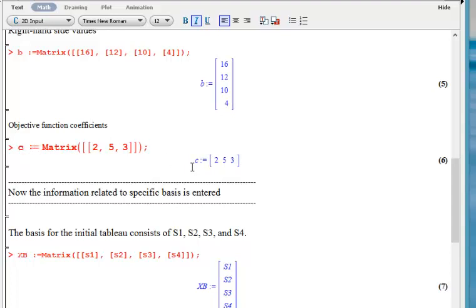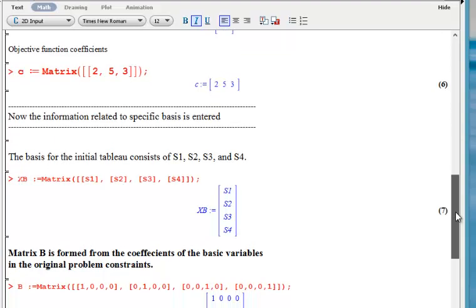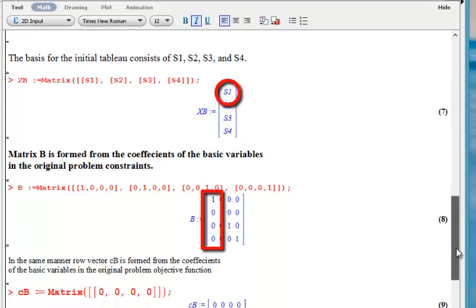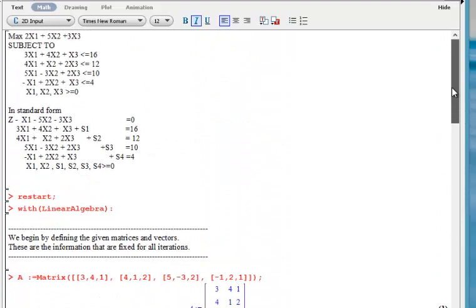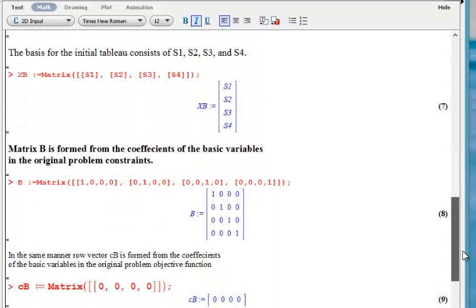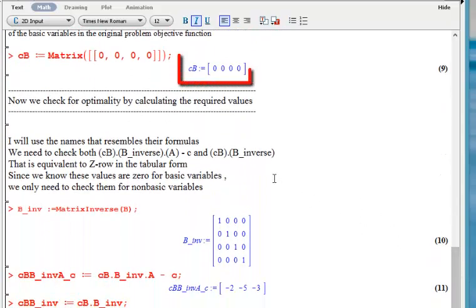Now we are going to look at the calculations related to the specific basis. In this case our basis includes S1, S2, S3, and S4. The matrix B is formed from the coefficient of these basic variables in the original problem. S1, S2, S3, and S4 are related to the identity matrix, so we will have that identity matrix designated here. The corresponding objective function values of this basis are all zeros.